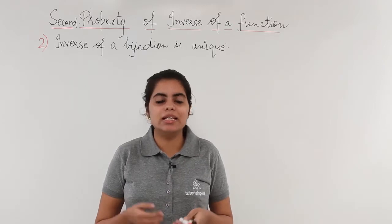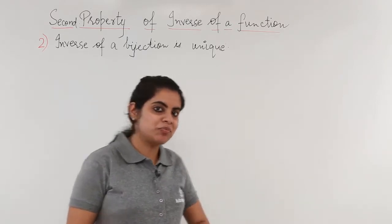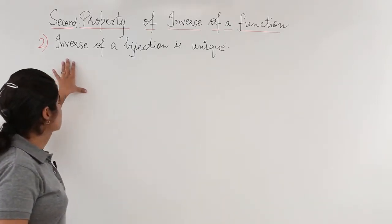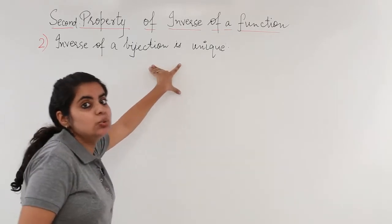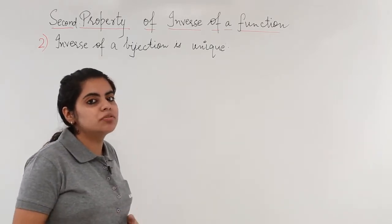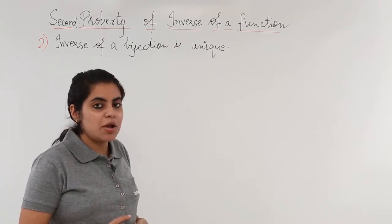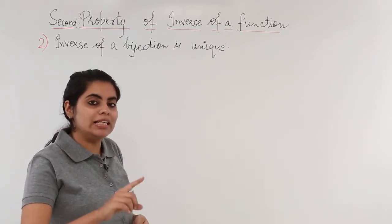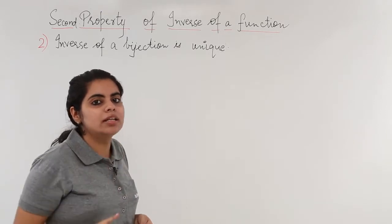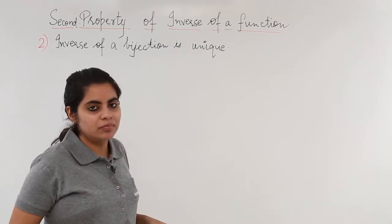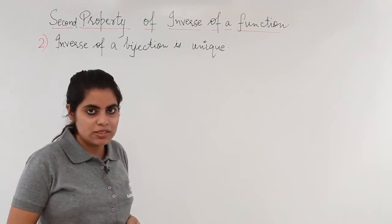Let's read the property and see a question regarding it. Inverse of a bijection is unique. That means if I have a bijective function and I would be finding the inverse of it, I would have or I should at least have only one inverse, nothing more than that. Let's see a working problem based on the same.